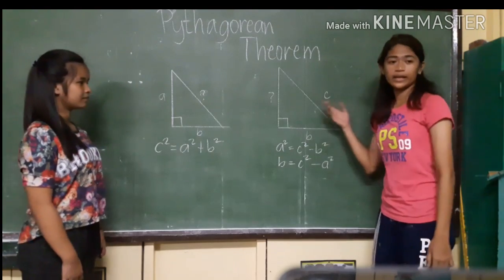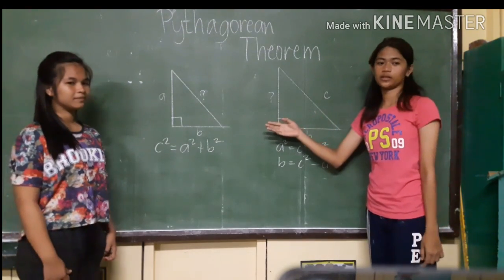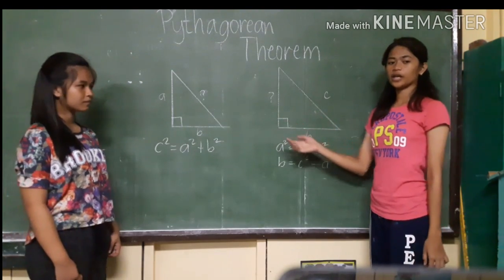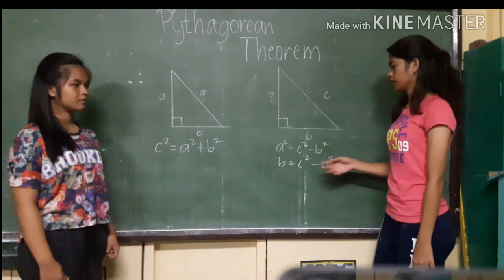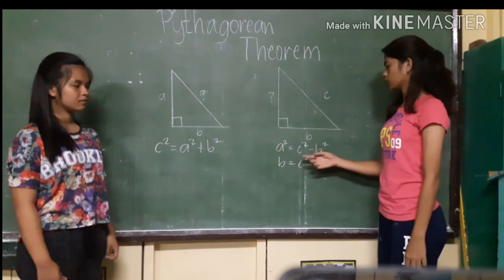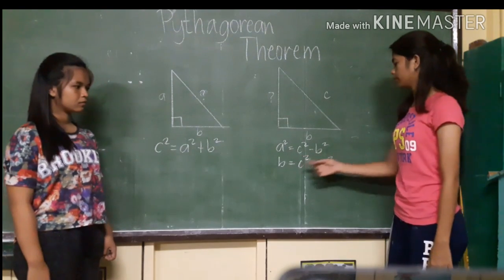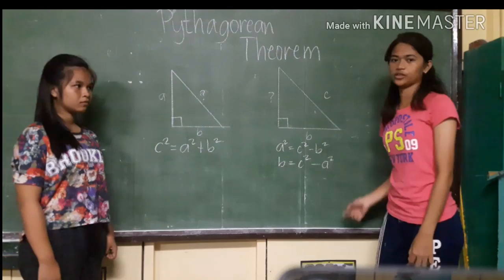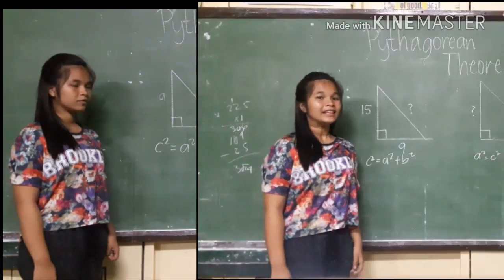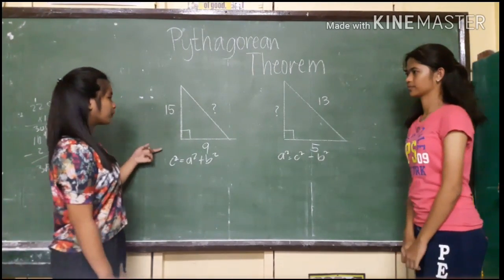And if a leg length is missing in the right triangle, we can use the equation a squared equals c squared minus b squared, or b squared equals c squared minus a squared. Let's try to solve this problem.